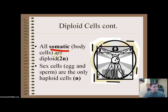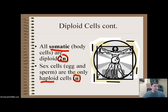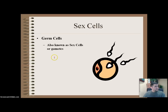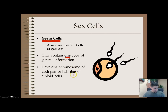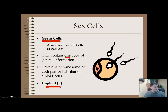All somatic cells — otherwise known as body cells such as skin cells, kidney cells, eye cells, hair cells, liver cells, and heart cells — are what's called 2N, meaning diploid. Now sex cells, otherwise known as egg and sperm, are the only haploid cells in your entire body, assigned the letter N. Sex cells are called germ cells and only contain one copy of genetic information — either from your mom or your dad, but not both like normal. Each sex cell has half of what a diploid or somatic cell would have.